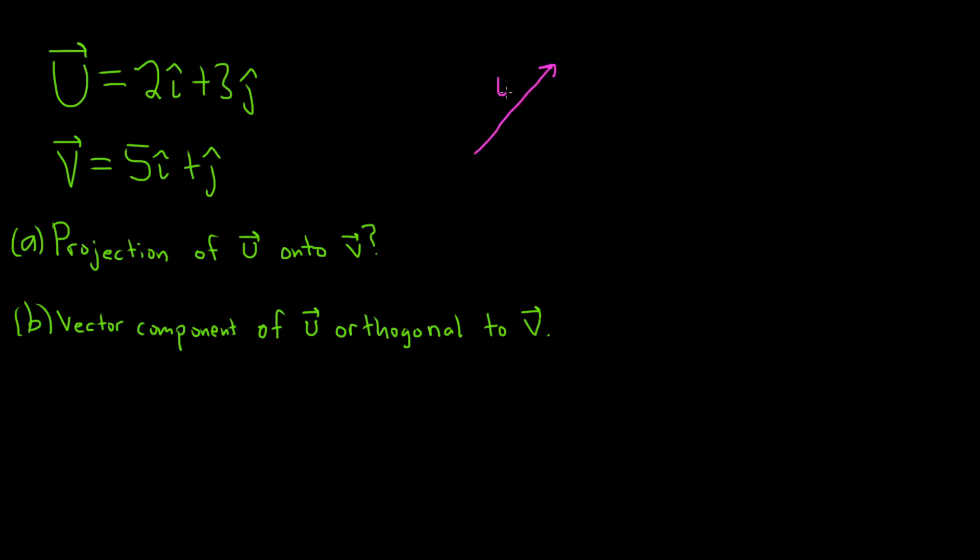So say we have a vector here and it's u. We have another vector here and it's v. So what are we finding in this problem? If you take this vector u and you drop it down onto v, you just drop it down.